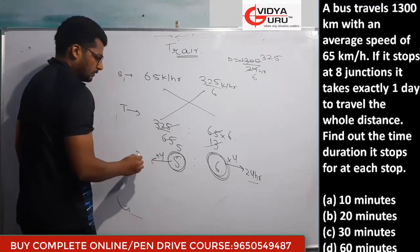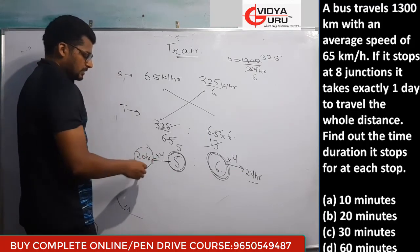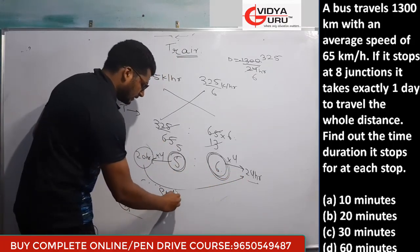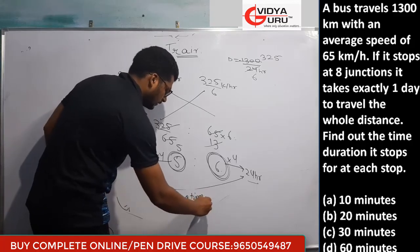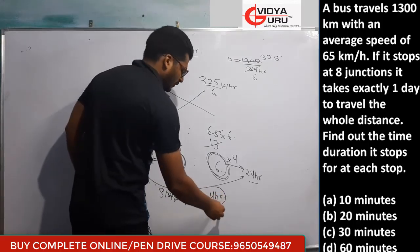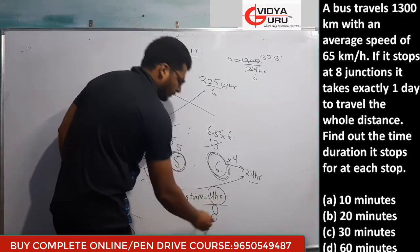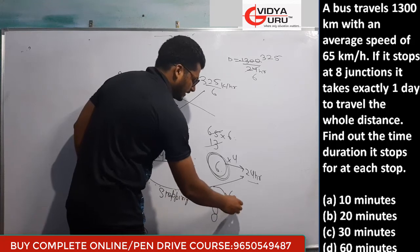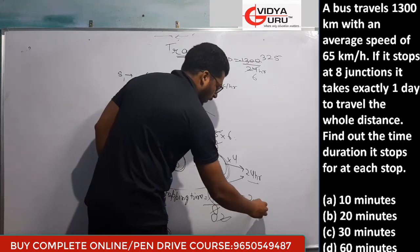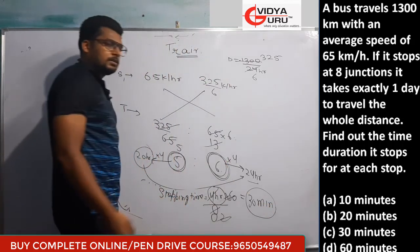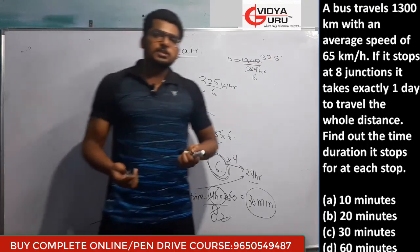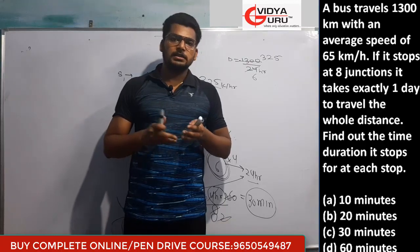Total stopping time = 4 hours for 8 junctions. Per junction: 4/8 = 0.5 hours = 30 minutes. So the train stops for 30 minutes at each junction. Option C is the correct answer. Please like, share and subscribe the channel. Thank you very much.